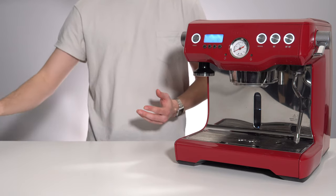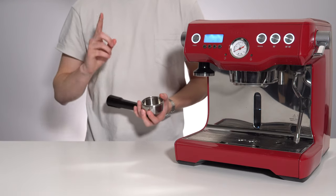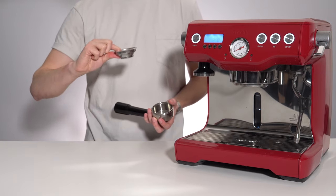The first thing you need to do is take your portafilter and install a single shot basket. The single shot is the smaller of the two.